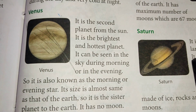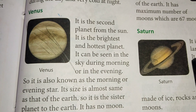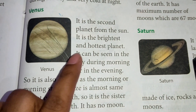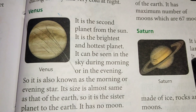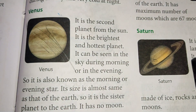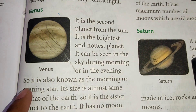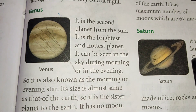Our second planet is Venus. It is the second planet from the sun. It is the brightest and hottest planet. It can be seen in the sky during morning or in the evening. So it is also known as the morning star or evening star.